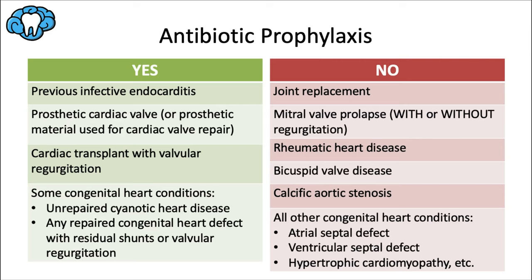Let's go through the 'Yes' column. We want antibiotic coverage for someone with a history of infective endocarditis — they've already shown they're at risk. Someone with a prosthetic heart valve, including a transcatheter-implanted prosthesis and homografts, or a prosthetic material used for cardiac valve repair such as annuloplasty rings and cords, should also have coverage. Also, someone who had a cardiac transplant with valve regurgitation — a leaking heart valve due to a structurally abnormal valve — specifically a transplanted heart with this condition.